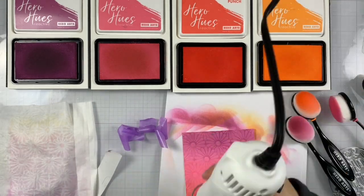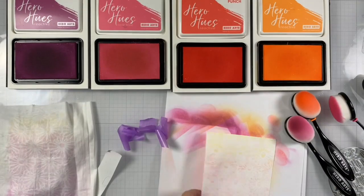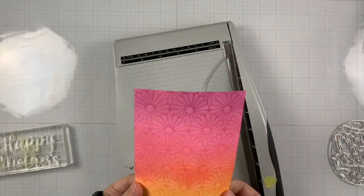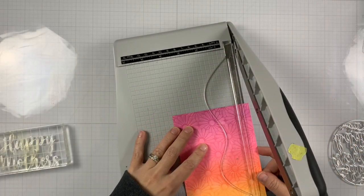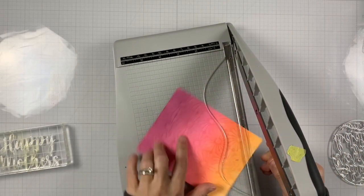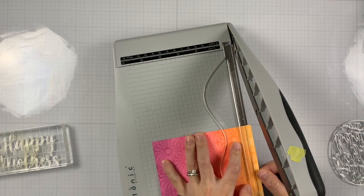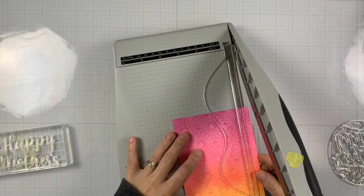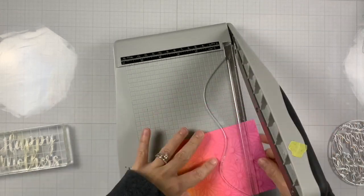So I'm trying to dry that out because the background is wet from the baby wipe. We're going to trim it down to 4 by 5 1⁄4. And then we're going to have left just to assemble our card.